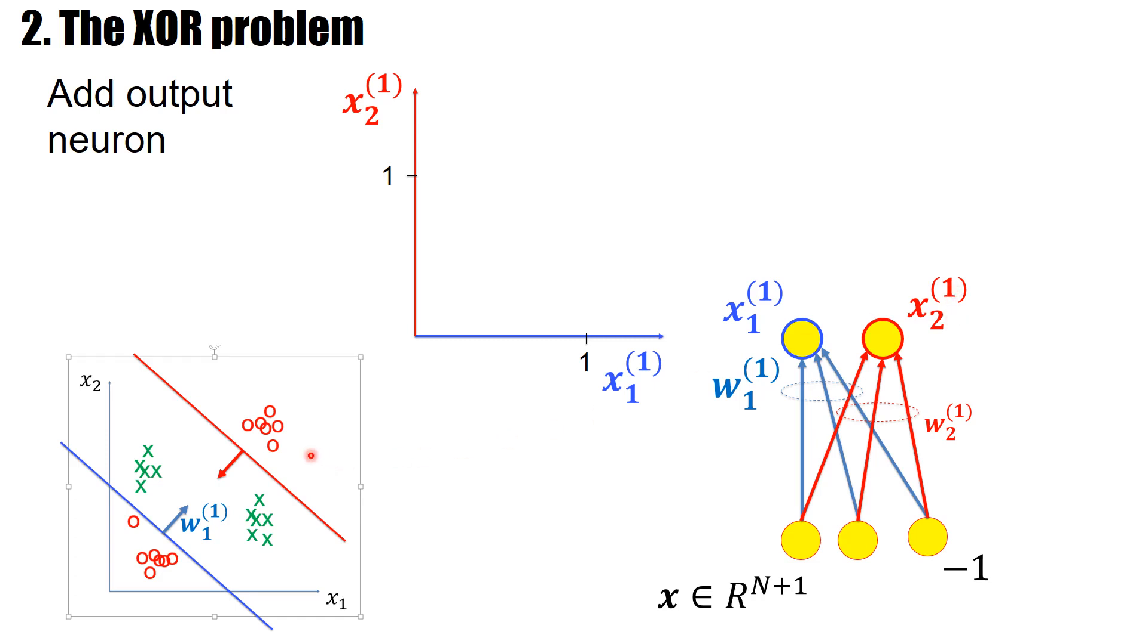Now all the data points that in the input space are positive examples lie on the correct side of the red and on the correct side of the blue neuron. So they all lie here at 1,1.